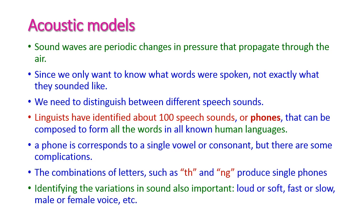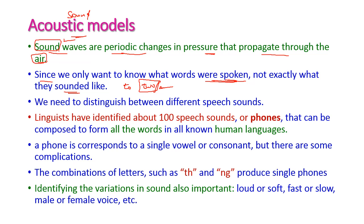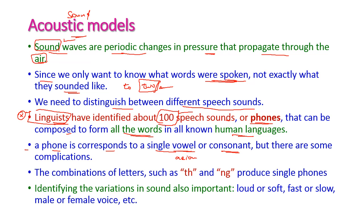The second model is the acoustic model. Acoustic means sound — sound waves are periodic changes in pressure that propagate through the air. Since we want to know which word was spoken, not exactly what it sounded like, we need to distinguish between different speech sounds. Linguists have identified around 100 speech sounds, otherwise called phones, that can compose all words in all human languages. A phone corresponds to a single vowel or consonant.